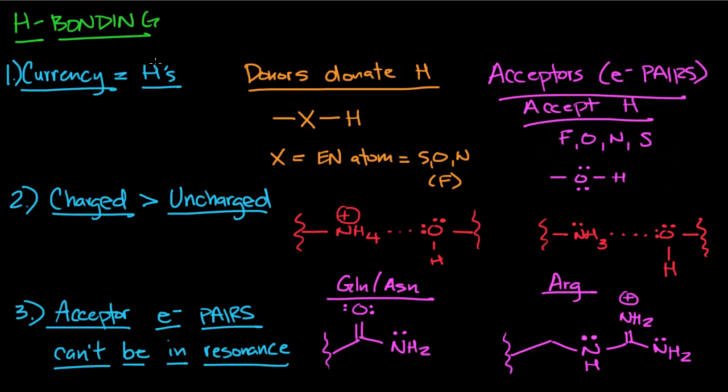The currency that we're going to be looking at is H's. So when you have a donor, the donor donates a hydrogen and the acceptor accepts a hydrogen.